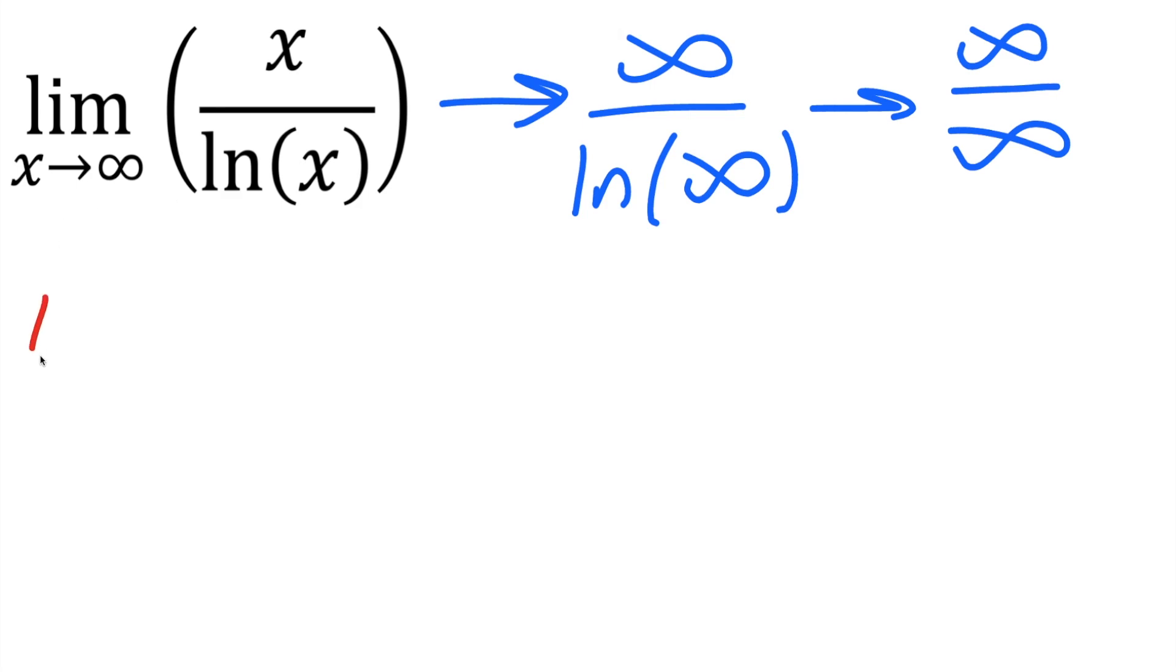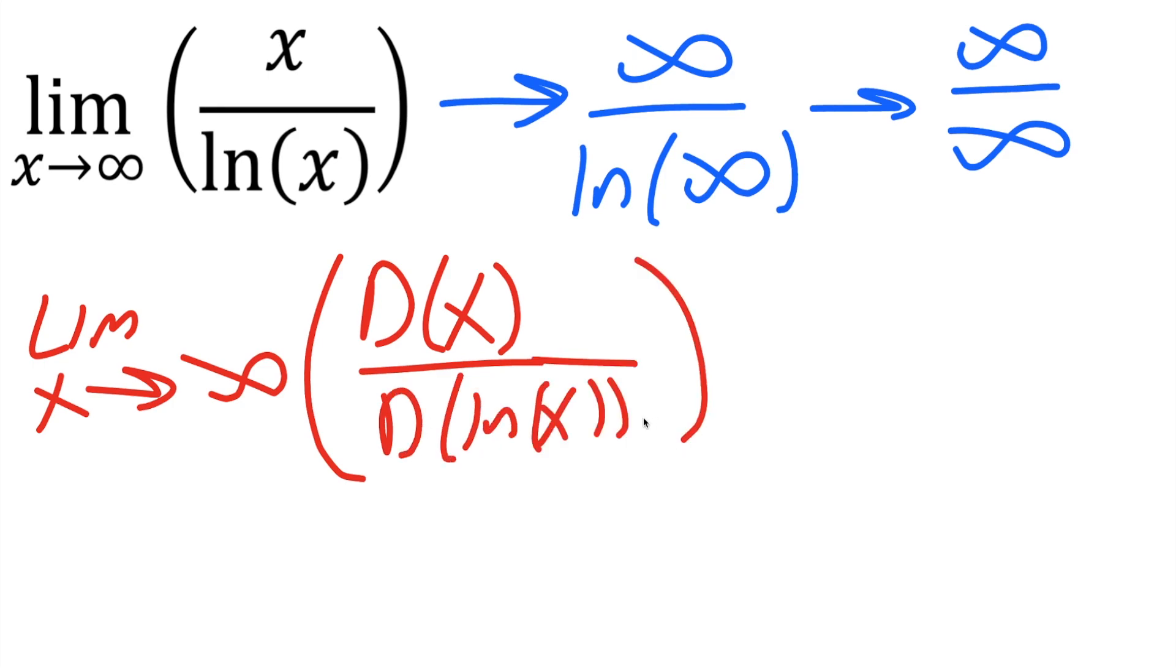And so the way we're going to actually solve this problem is say limit as x approaches infinity, you're going to take the derivative of the numerator, and you're going to take the derivative of the denominator. And we can use L'Hopital's rule whenever we have infinity over infinity.